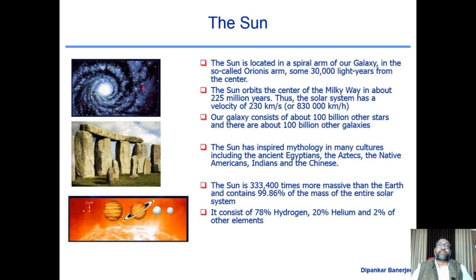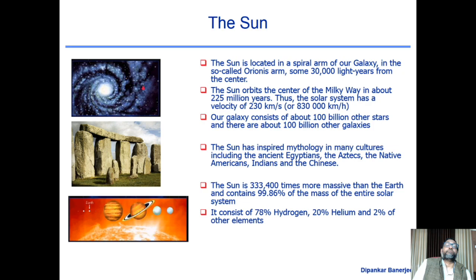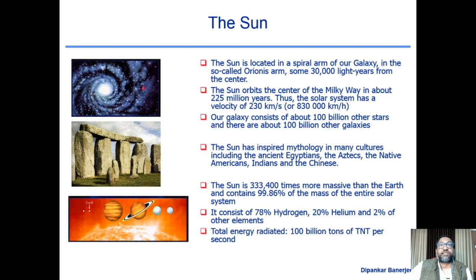The sun is a middle-aged star. Certain nuclear reactions happen inside a star which make it shine — this is called hydrogen burning. It consists of about 78% hydrogen, which gets converted into helium, with some 2% other elements at this stage. The total energy radiated is 100 billion tons of TNT per second — equivalent to 100 billion hydrogen bombs exploding inside the sun every second.